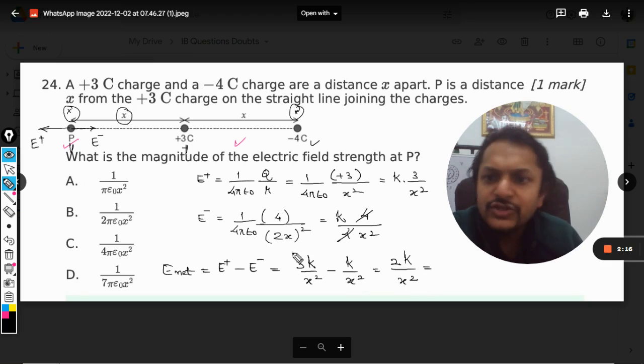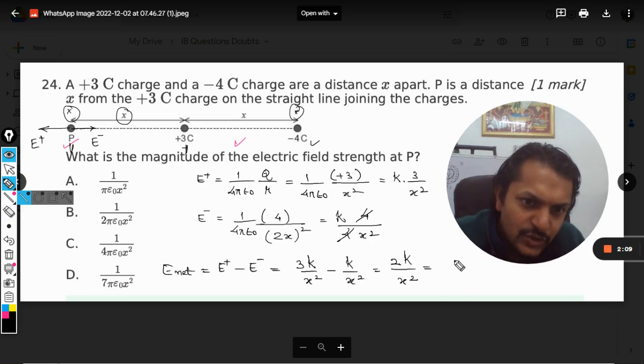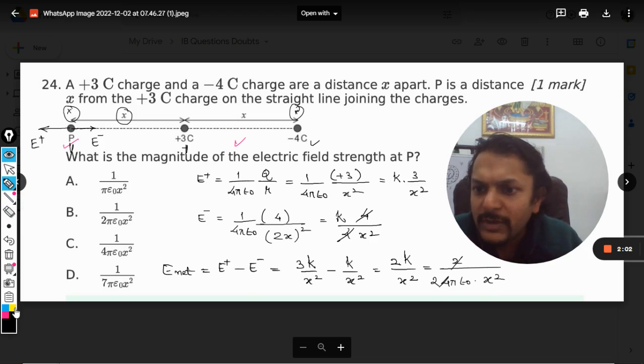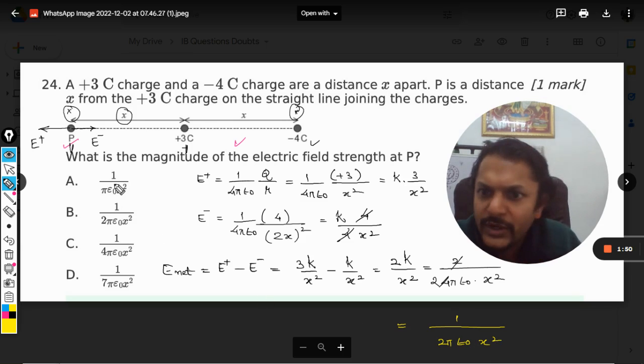Since there's no answer in terms of k, we need to expand k. It becomes 2/(4πε₀x²), which simplifies to 1/(2πε₀x²). And there we go—the answer is B.